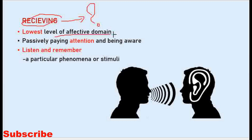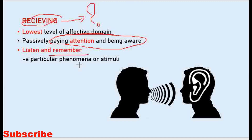Receiving is the lowest level of the affective domain. It involves passively paying attention to and being aware of something. At this level, we listen and remember a particular phenomenon or stimulus. For example, listening to someone speak.